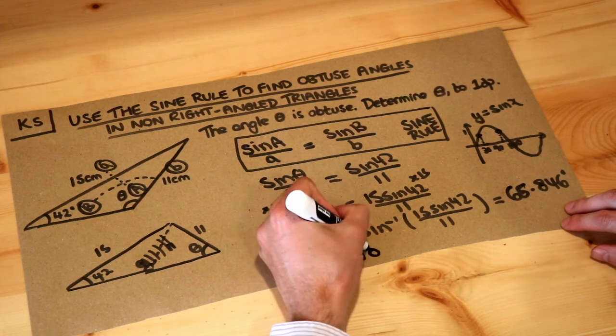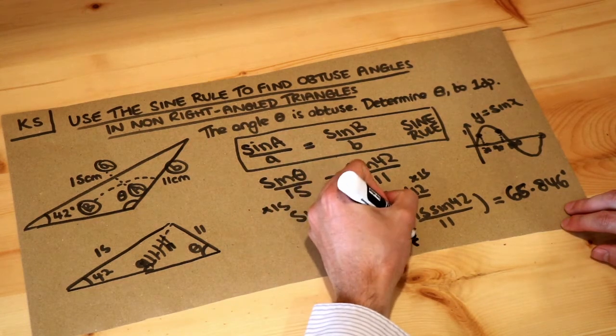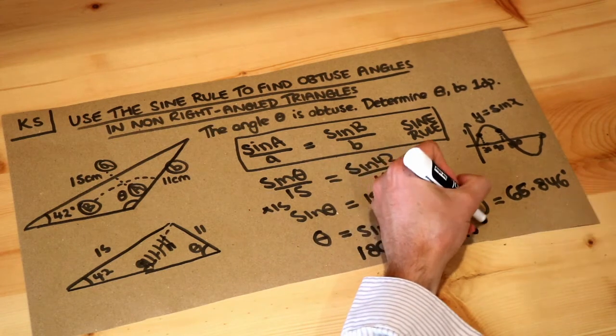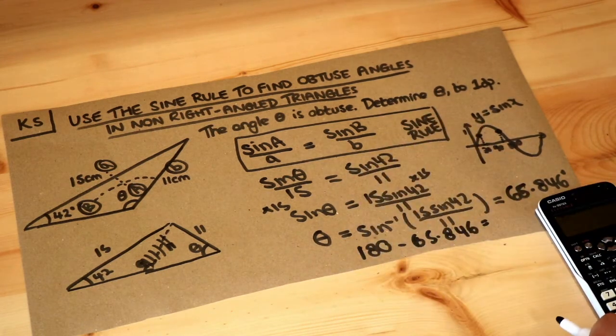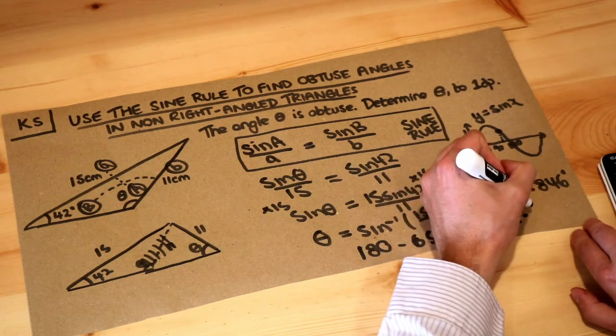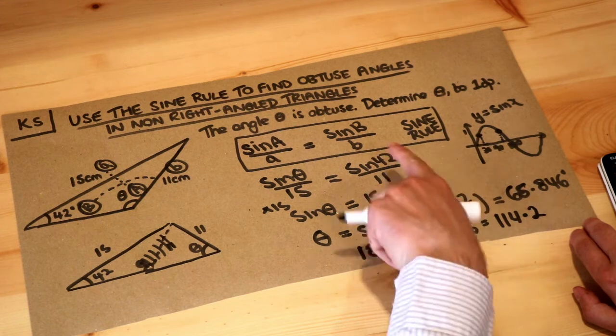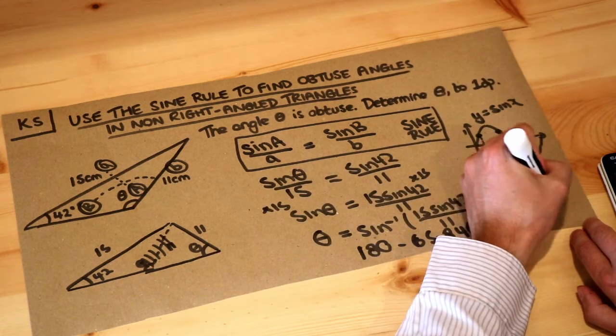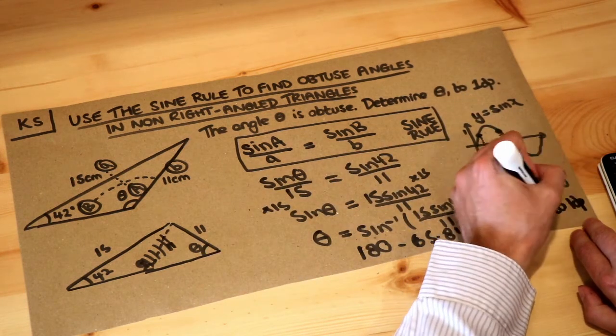So we do 180 minus 65.846. So I'm going to just do 180 minus that answer, and that's going to give me another solution of 114.2, if we want it to one decimal place.